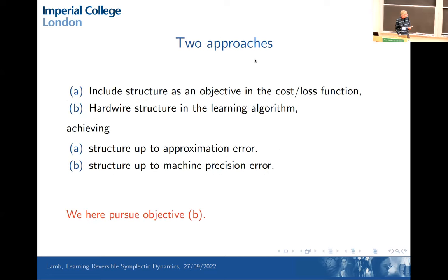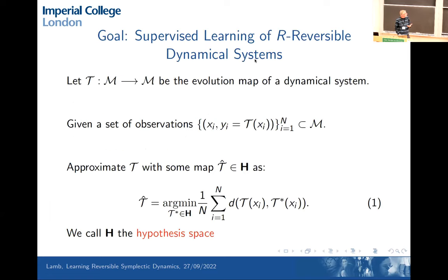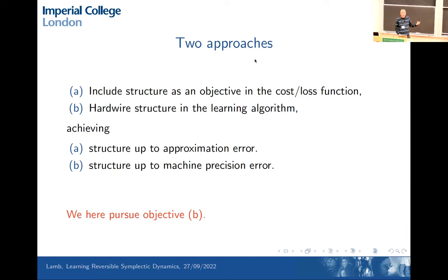There are two approaches as far as I've seen. Either you include the structure as some kind of objective in the cost or loss function — you try to approximate something and as part of your approximation you try to preserve a certain structure, so you just put it in your loss function. An alternative way is to hardwire the structure in the learning algorithm — you simply don't allow learning anything other than something that has a specific structure. In the first approach you get structure up to the approximation error; in the second, if you hardwire it, you get the structure exactly up to machine precision. I'm going to pursue approach B and hardwire the structure.